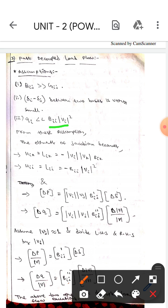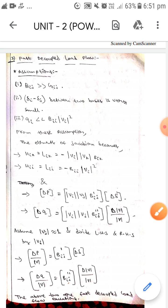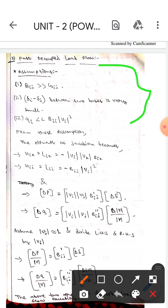of Jacobian become: Hik equals Lik equals minus modulus of Vi into modulus of Vk into Bik. Whereas the next one is Hii equals Lii, which equals minus Bii into modulus